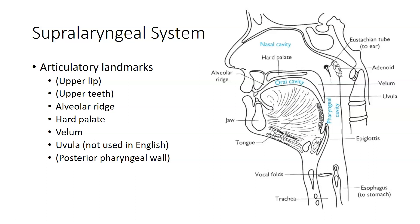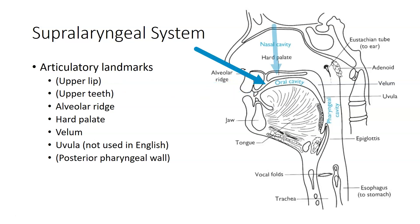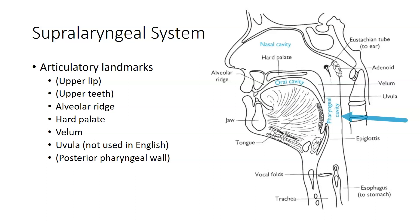There are a variety of important articulatory landmarks in the supralaryngeal system. In this image, we can see the upper lip and upper teeth. The alveolar ridge, the hard palate, and the velum are all marked specifically. The uvula is marked, but it's not distinctively used for speech sounds in English, though some other languages have consonant sounds where the tongue is retracted toward the uvula. Not marked in this image is the posterior pharyngeal wall, which helps define the outside of the articulatory space in the pharyngeal cavity and is relevant to how articulations shape the resonating space for speech.